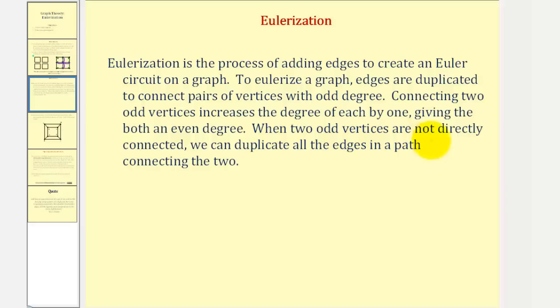When two odd vertices are not directly connected, as we saw in our example, we can duplicate all the edges in a path connecting the two.